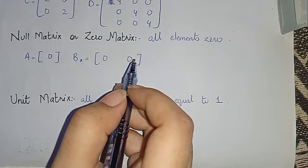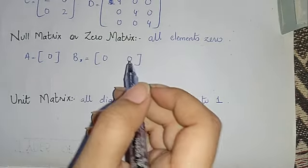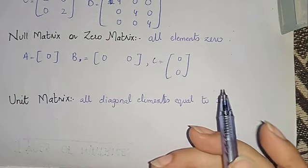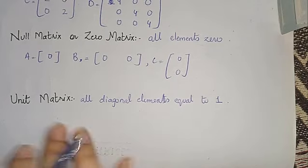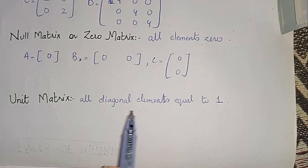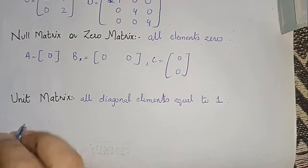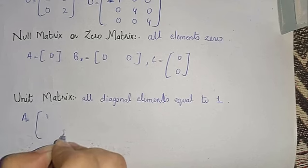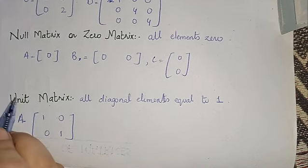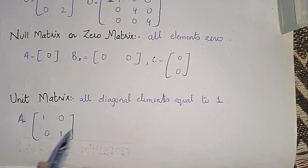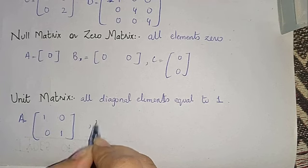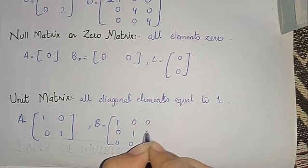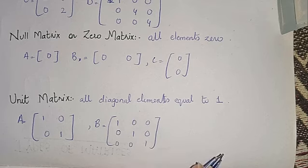A 2x2 matrix where all elements are 0 is a square null matrix. This is also a null matrix — null matrix is very easy. Now, unit matrix. A unit matrix is a type of diagonal matrix, but with a fixed condition: the diagonal elements are 1 and the rest of the elements are 0. Another example — diagonal elements are 1 and the rest are 0, so we call that a unit matrix.